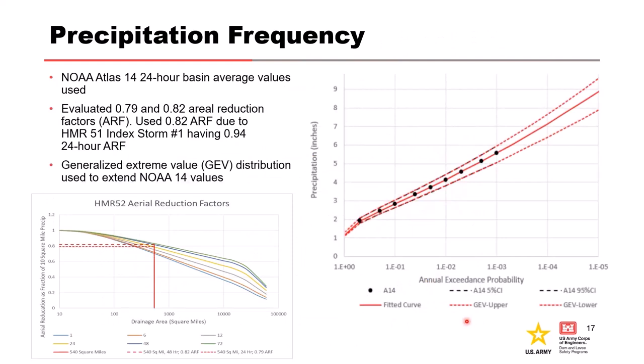Now let's look at the precipitation frequency analysis. This was one of the first projects that we applied precipitation frequency in the Bayes analysis. For R.D. Bailey, it was determined that the critical precipitation duration was one day, different than our inflow volume critical duration of two days. The areal reduction factor for this basin size came to be about 0.79 to 0.82. However, we went back and looked at HMR51 index storms and the index storm number one had a 24 hour ARF of 0.94. So we decided to go with the higher end of 0.82. It's okay to do a little bit of engineering judgment if you have reasons to stray from the standard.